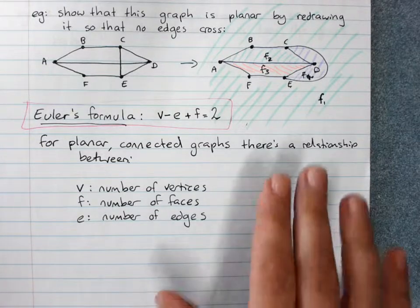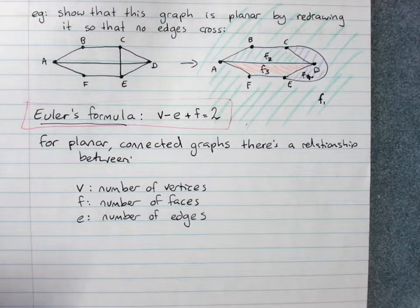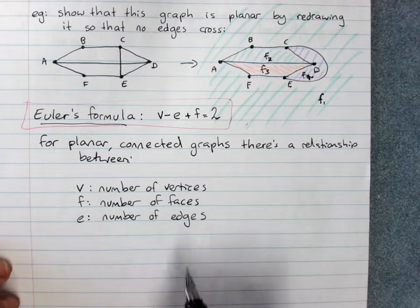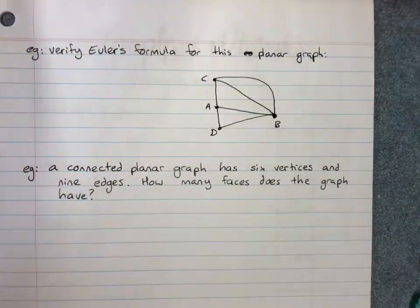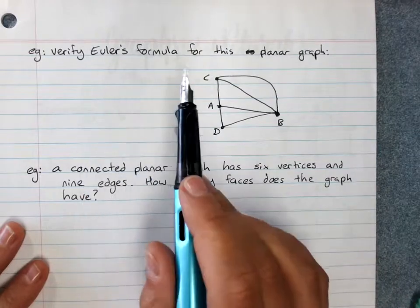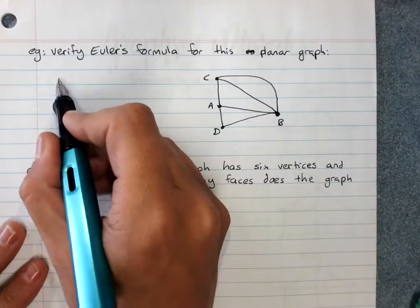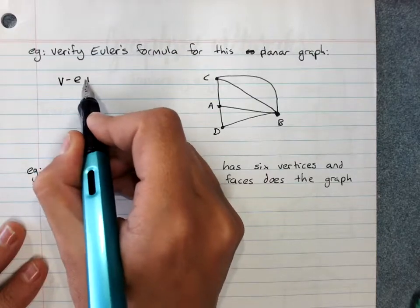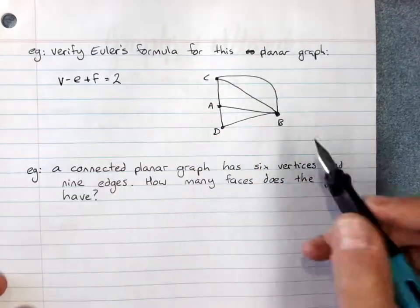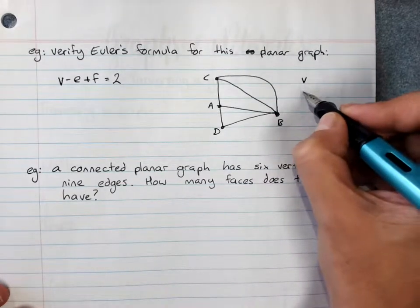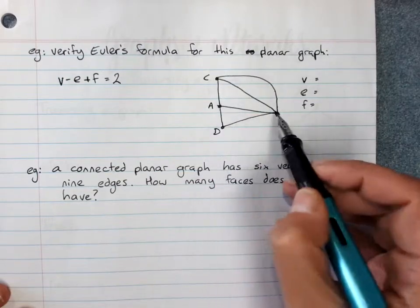So for this example here, let's do this one. Verify Euler's formula for this planar graph. So Euler's formula is V minus E plus F equals 2. If you're asked to verify it, you'd state the number of vertices, edges and faces. So vertices: 1, 2, 3, 4.